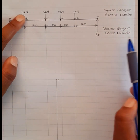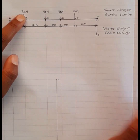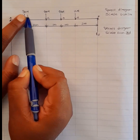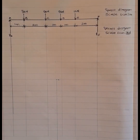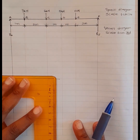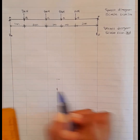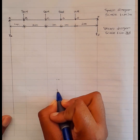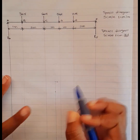I'm going to take this 3 kilonewtons and divide it by 2 kilonewtons — that's the given vector diagram scale — and I get 1.5. So I'm going to measure 1.5 centimeters down from point A, and that point will be point B.